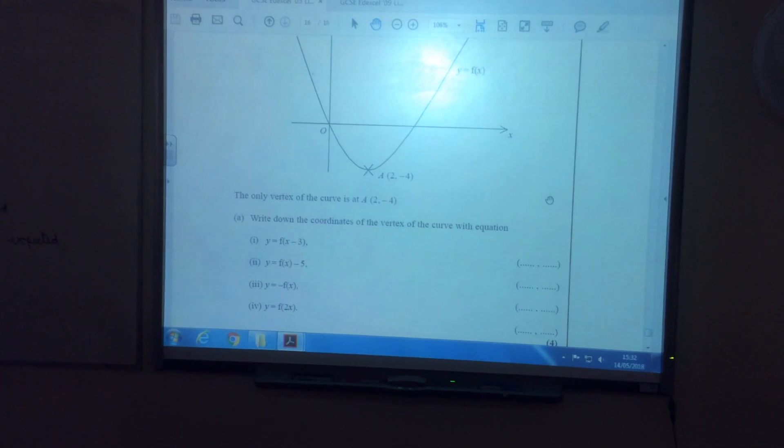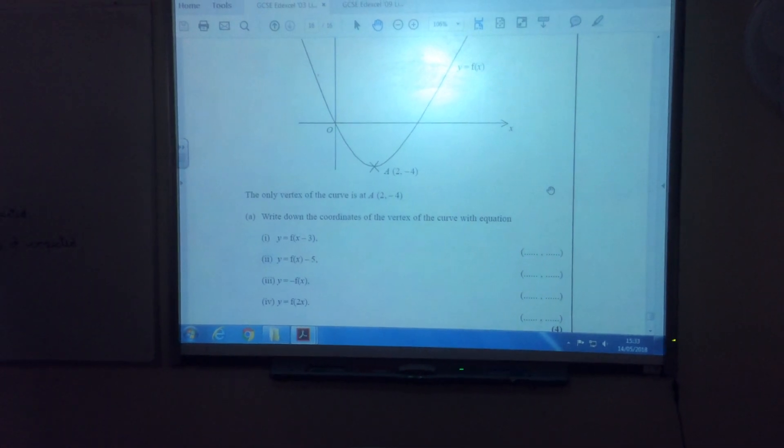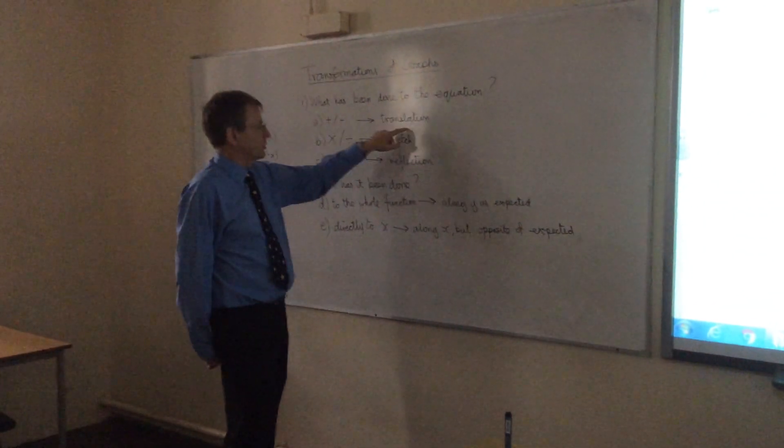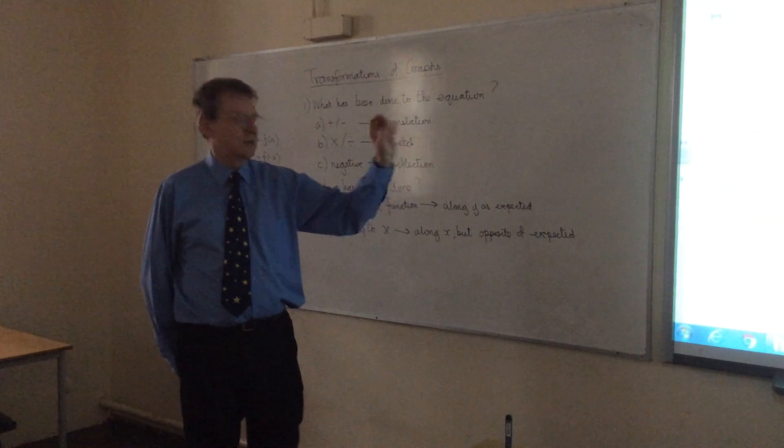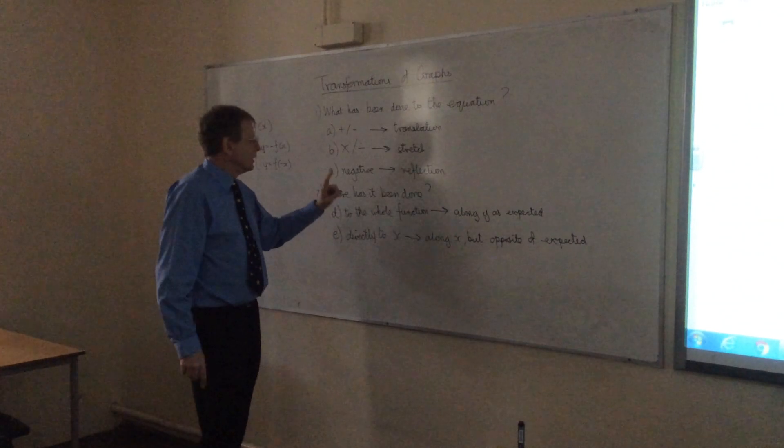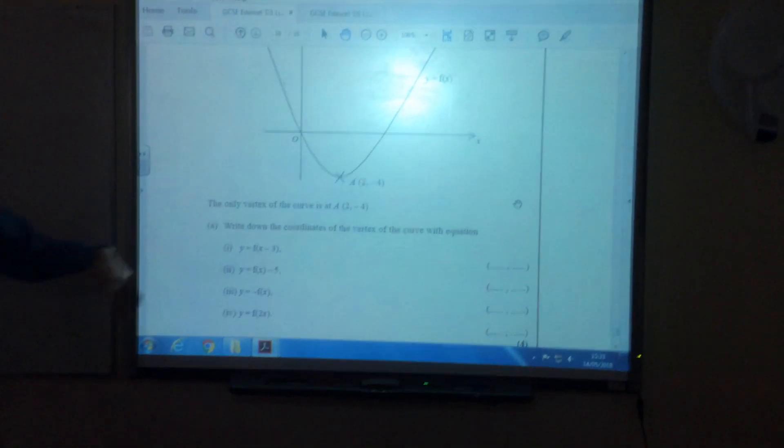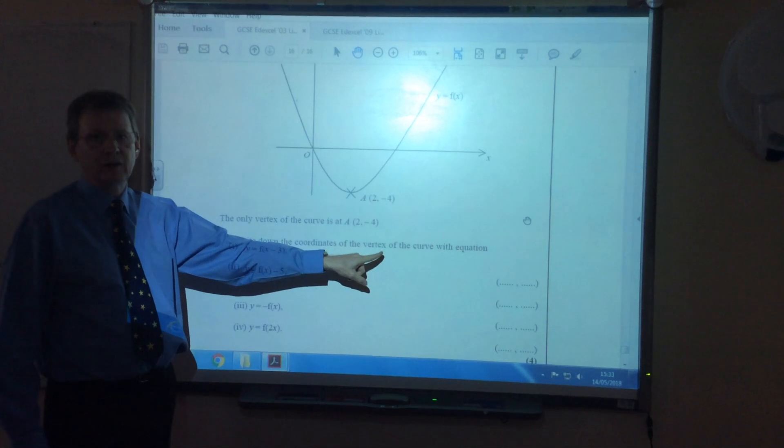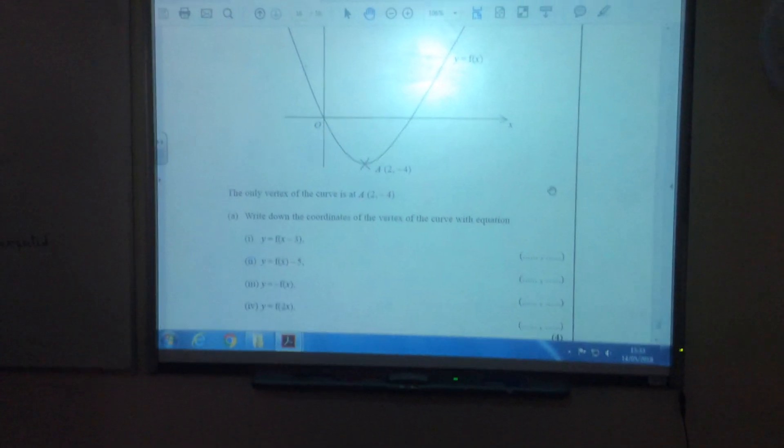Right, part B, or part 2 even. y equals f of x minus 5. This time, again, what's happened? Subtracting 5. Well, it's a translation. But this time, it is done to the whole function. It is f of x, and then 5 is being subtracted. So this one is here. It's along y as expected. So it's going to go down 5. If it goes down 5, the x-coordinate won't change, but that will decrease by 5 to negative 9. So that will give us the new position of a will be 2, negative 9.